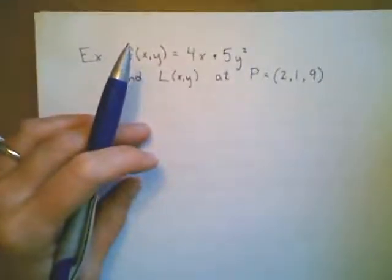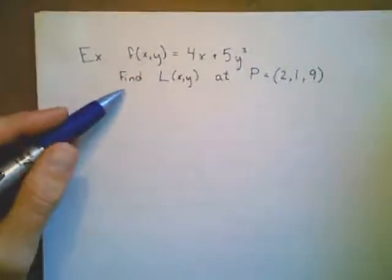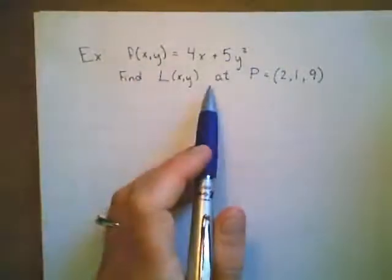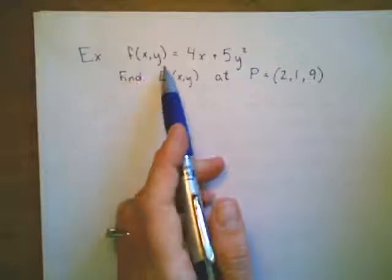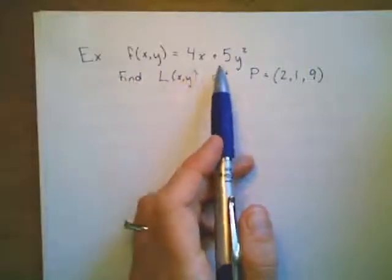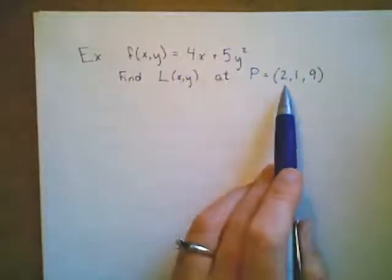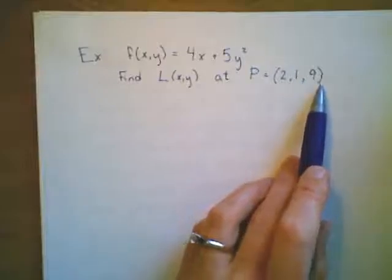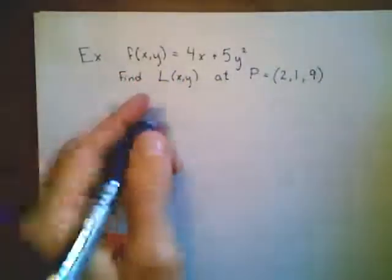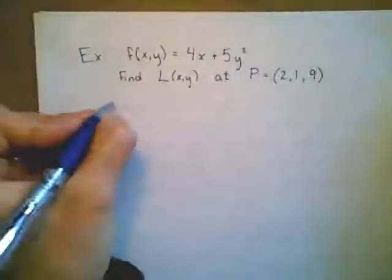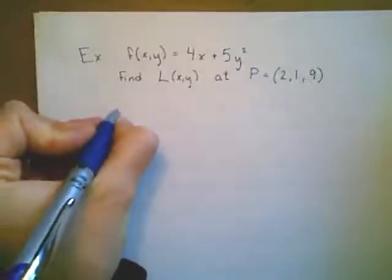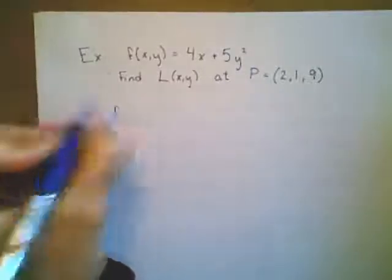So before we get to a lot of details of the theory, let's look at a quick example. We're going to find the linearization of this function, f of x, y is equal to 4x plus 5y squared at the point 2, 1, 9. Let's recall what our linearization is going to be. What do each of our pieces look like? I'm going to do a little bit of scratch work.